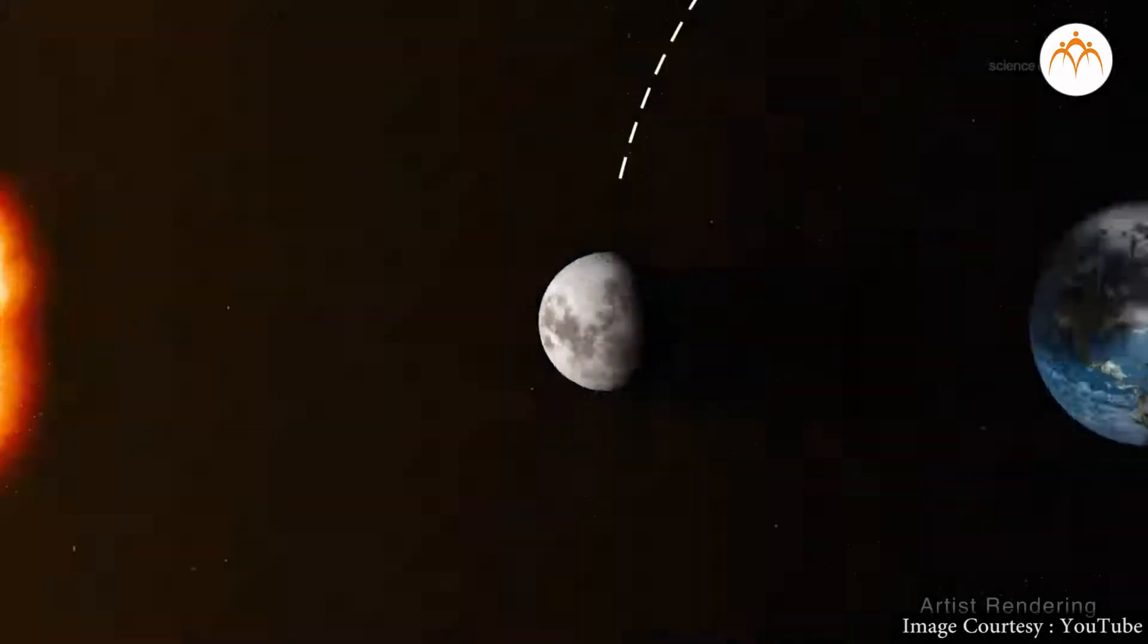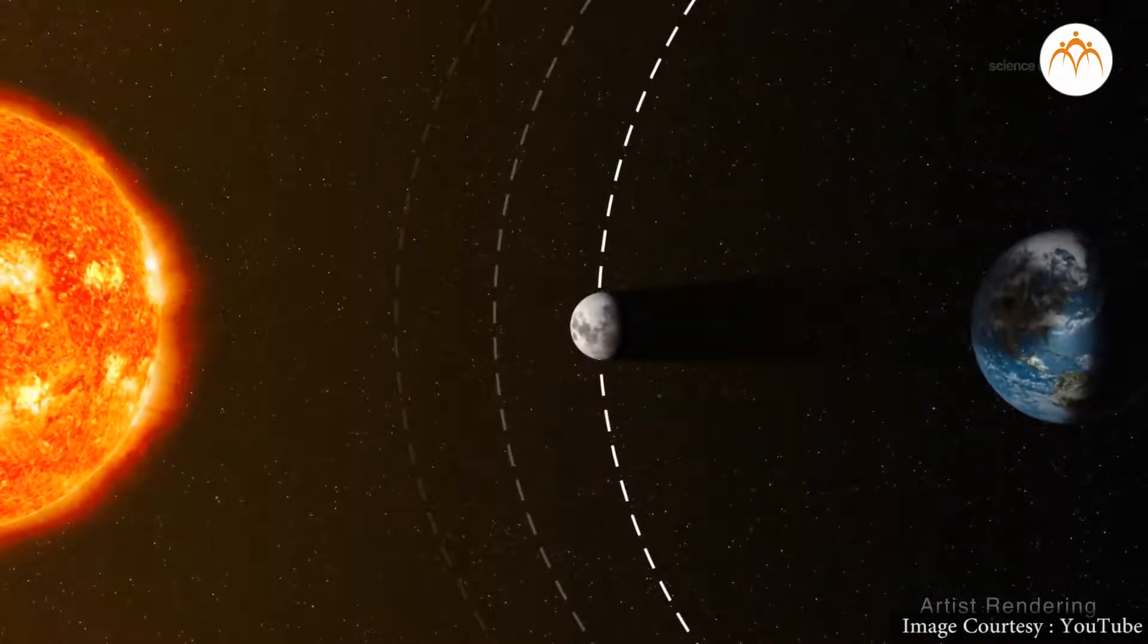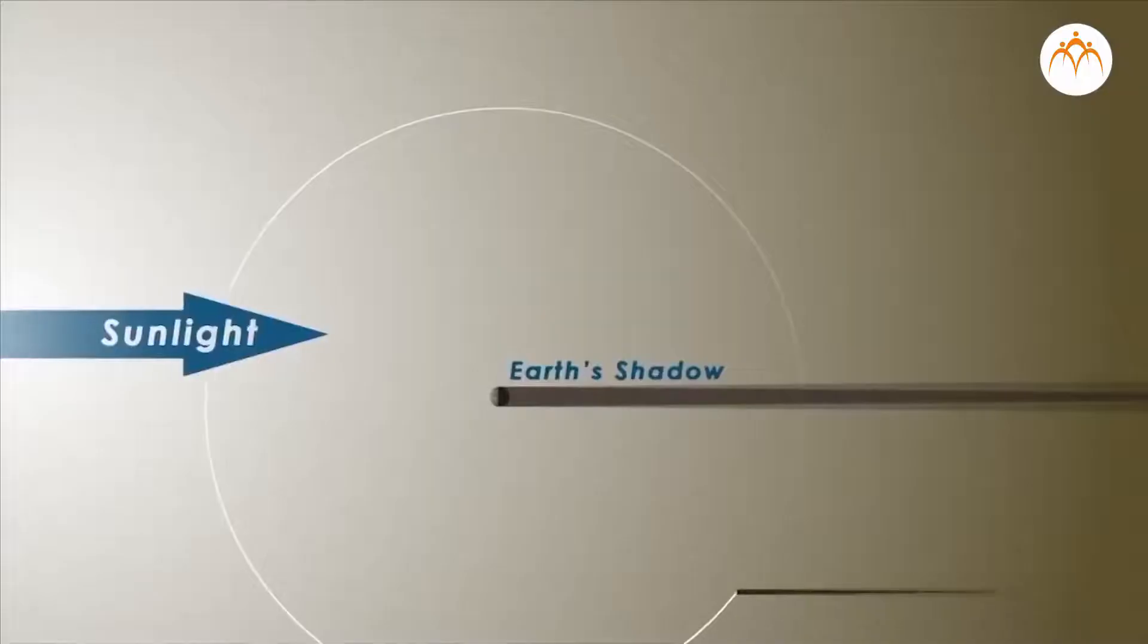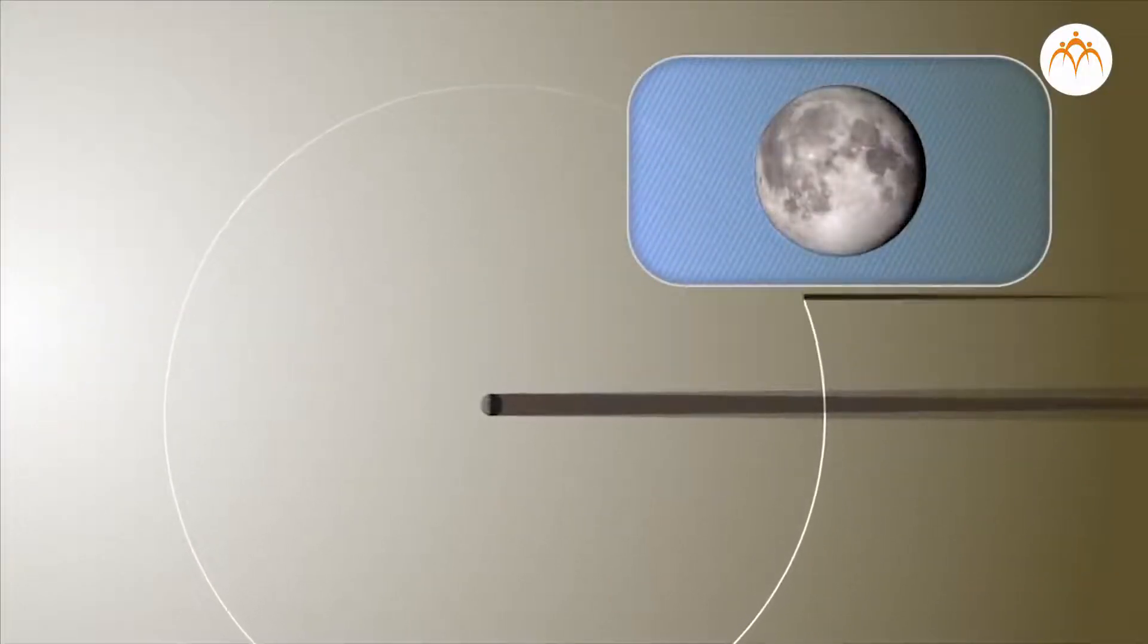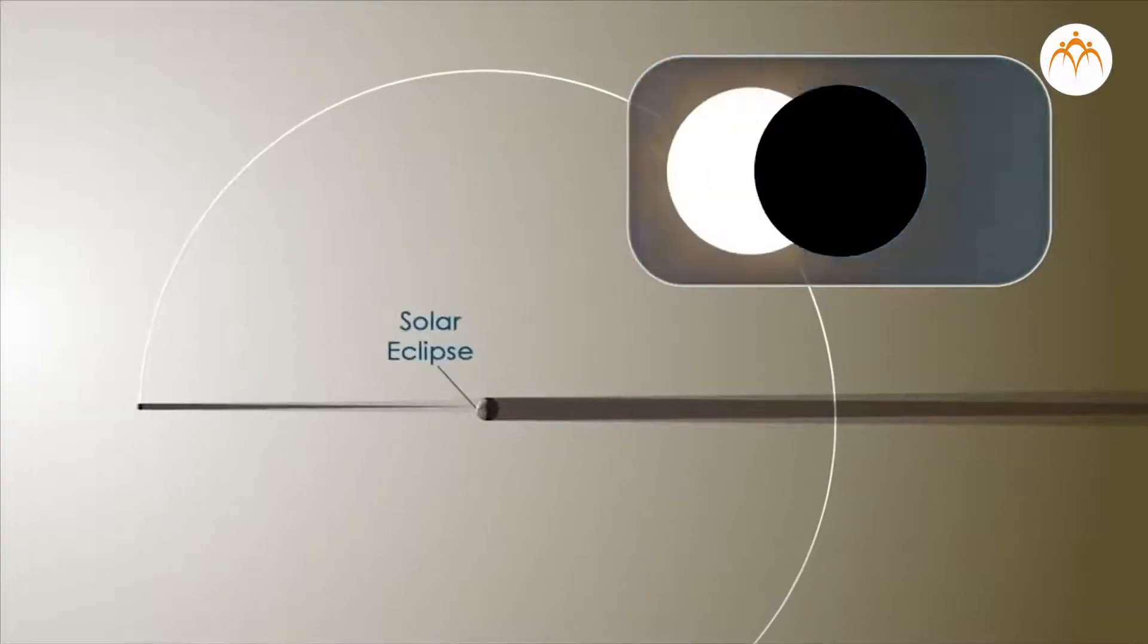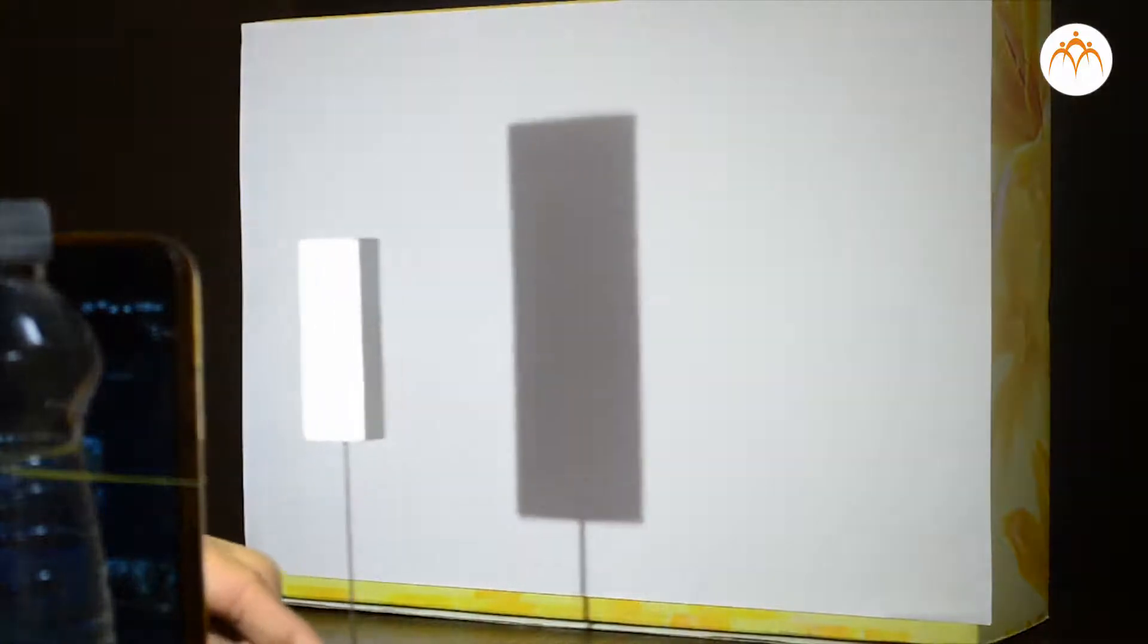These planetary objects revolve in different orbits. They are of different sizes as well. During certain times of the year, they may come in one plane and align along a line. This situation is similar to what we looked at while learning about shadows.